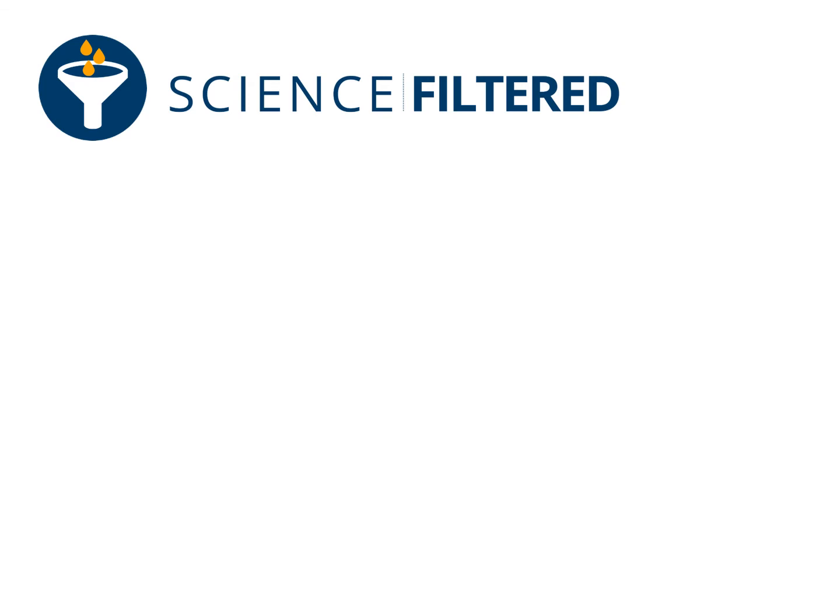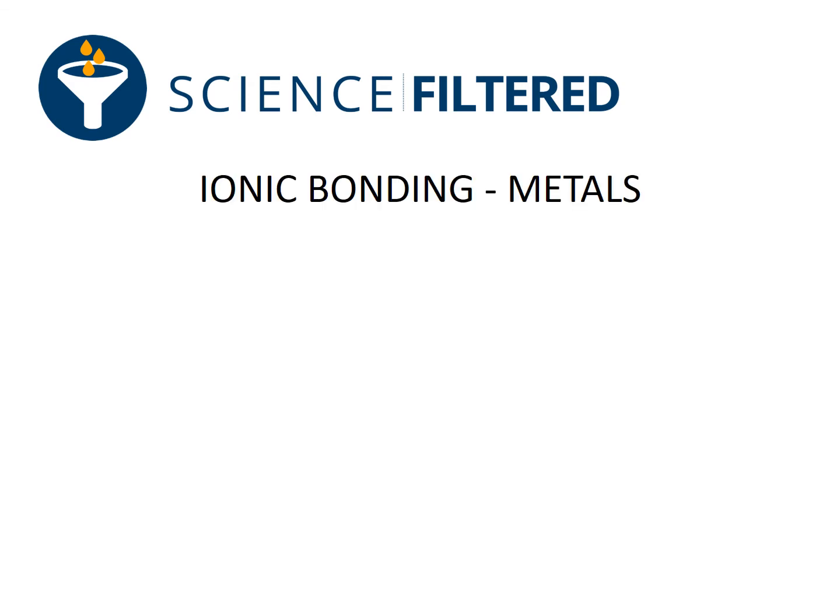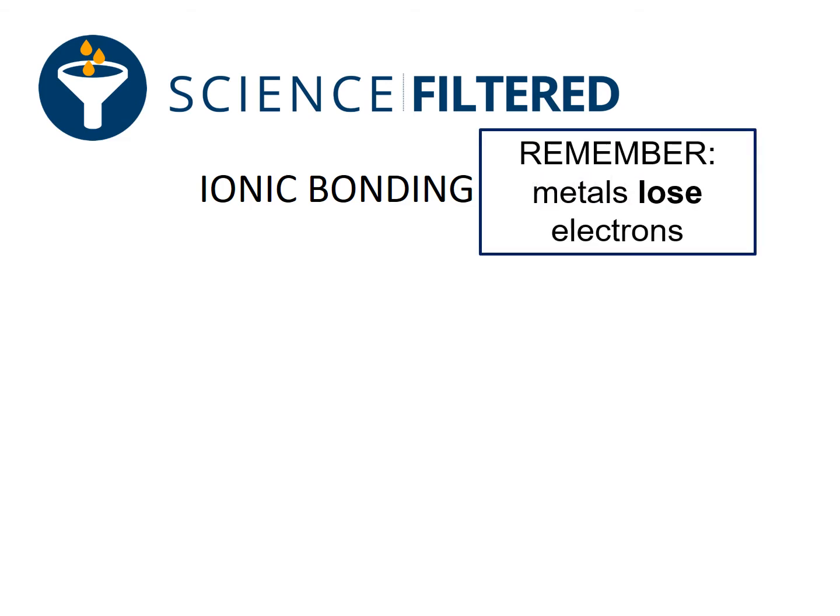Ionic bonding takes place between metals and non-metals. For this video, we're going to focus specifically on what happens to the metals. Remember, we said that the metals lose their electrons. Let's see how this happens in practice.